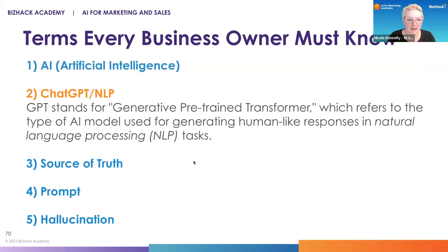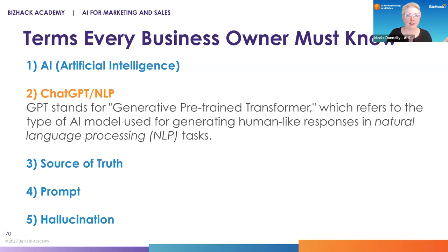ChatGPT is a tool — it's the one that really broke AI out to the public. It's very easy to use and doesn't take too much time to learn. GPT stands for Generative Pre-Trained Transformer, which means it was trained on the internet up to 2021. So you're not going to get new information unless you put it in yourself. For example, if you had new legislation, you could upload that into ChatGPT and ask it for things relevant to your business or industry, and make it searchable.